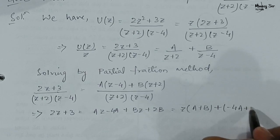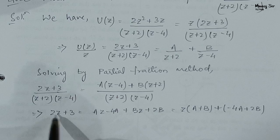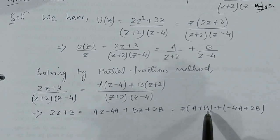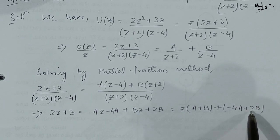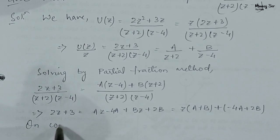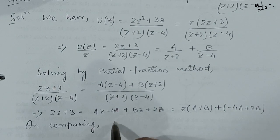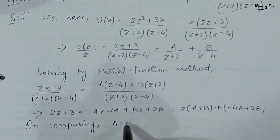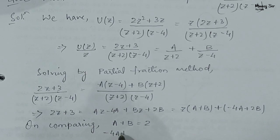Comparing coefficients: for z we have A + B = 2, and for the constant term we have −4A + 2B = 3. Let this be equation 1 and this as equation 2.